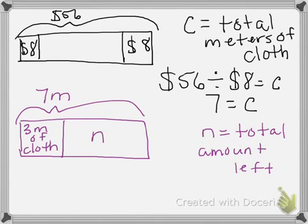Our unknown is N. Our equation will look like this. 7 meters total minus 3 meters used for the dress equals N. 4 is our unknown. Maria has 4 meters of cloth left over. Let's take a look at the next one.